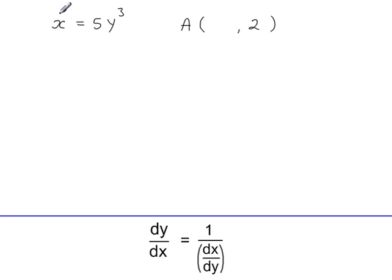We have a curve with the equation x equals 5y cubed, and A is a point on this curve. So the y-coordinate here is 2, so 2 cubed is 8, 8 times 5 is 40. So the x-coordinate is 40.